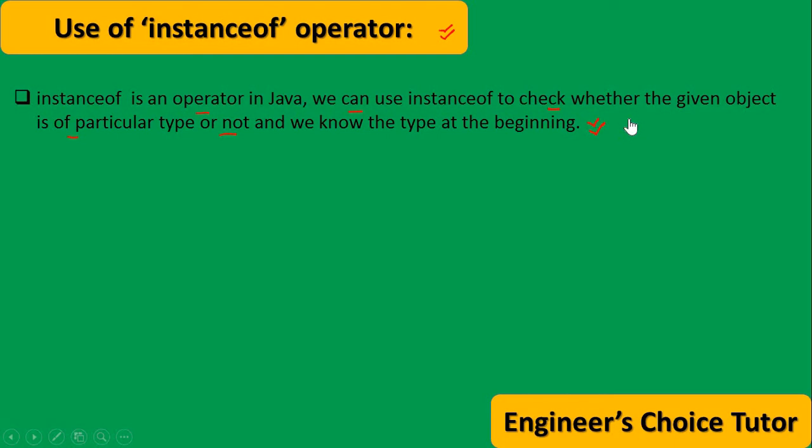Suppose I have one object. I have to check that this object is student type or not. How I know that this object is of student type or not? By the help of the instanceof operator.